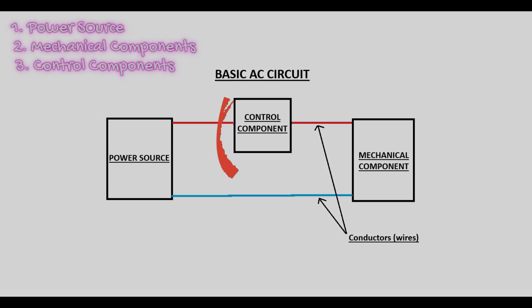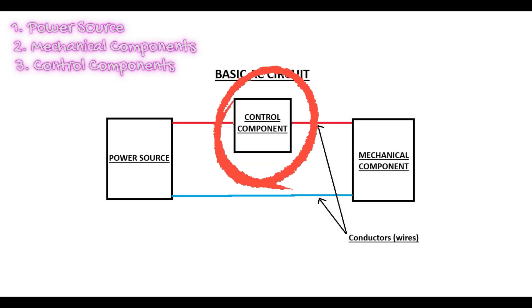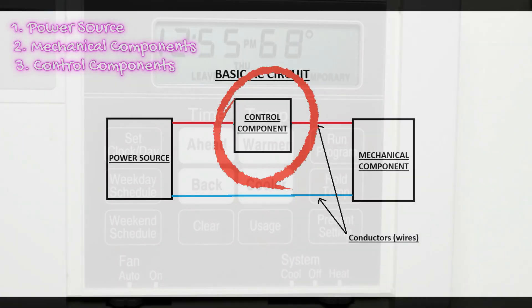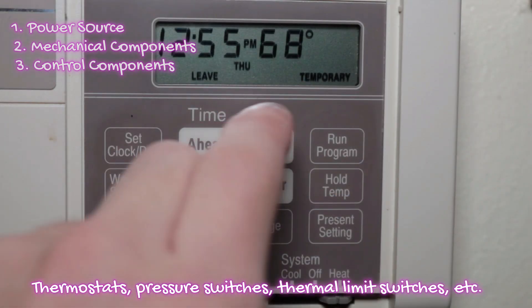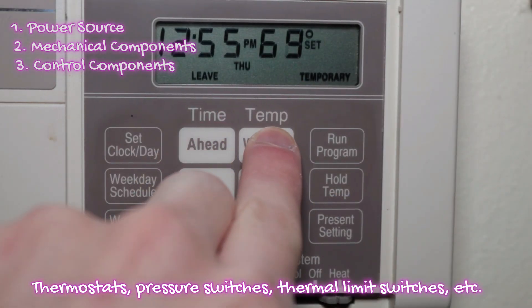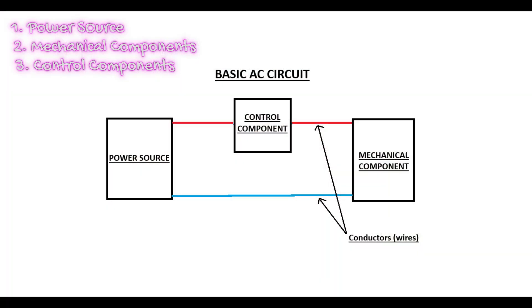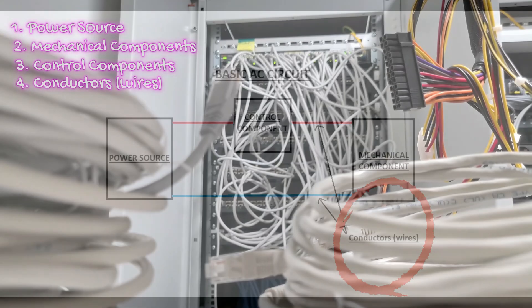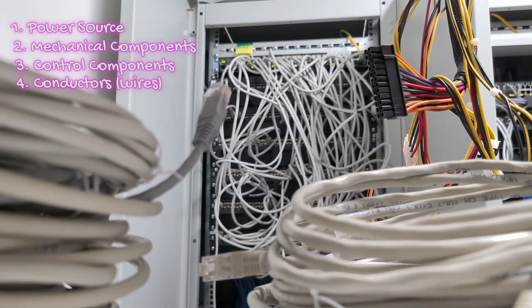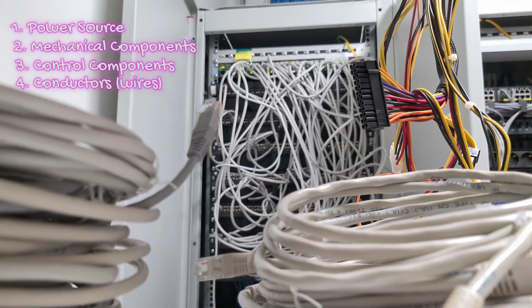We have control components, which are designed to turn our mechanical components on and off when we want them to. And of course you have conductors, which are the wires themselves that connect all these components together.